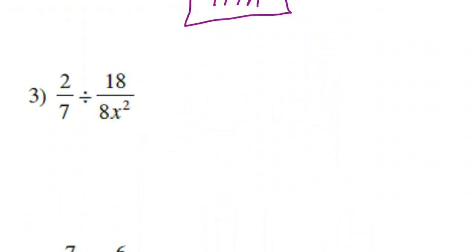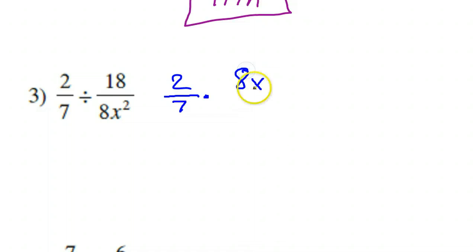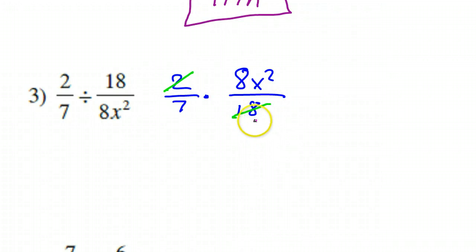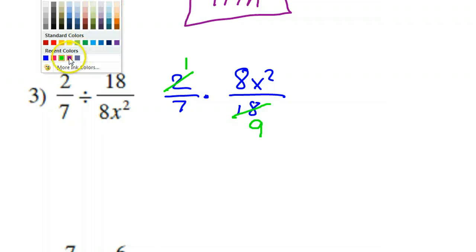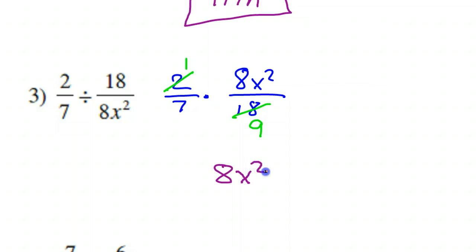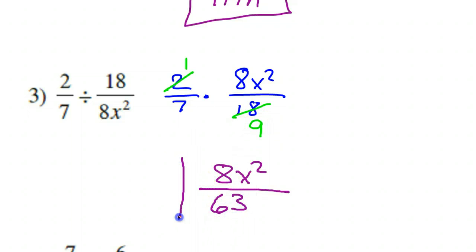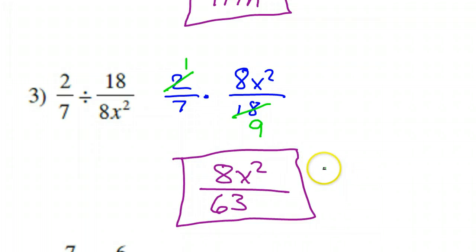Number 3: multiply by the reciprocal. So this will be 2/7 times 8x squared over 18. I like to simplify things now — 2 and 18 are both divisible by 2. 2 divided by 2 is 1, 18 divided by 2 is 9. I don't see anything else that can be divided. So the final answer is 8x squared over 63. And the restriction: x cannot equal 0, because x is in the denominator and it can't be 0.